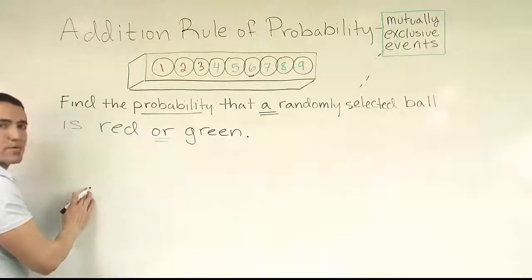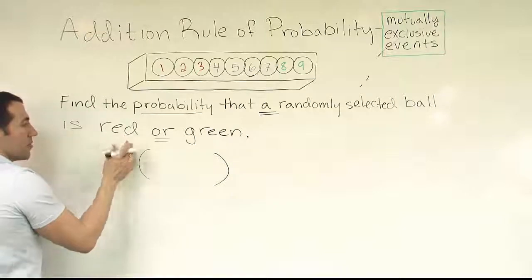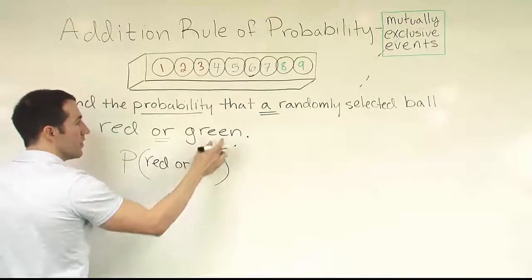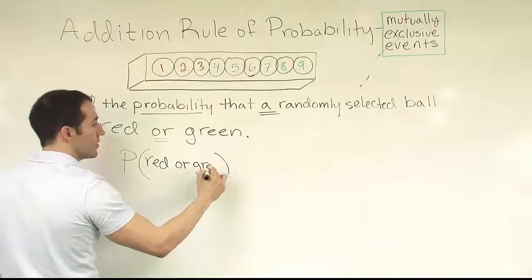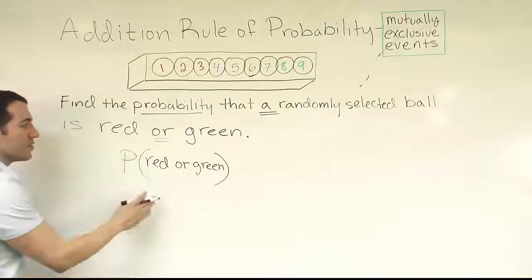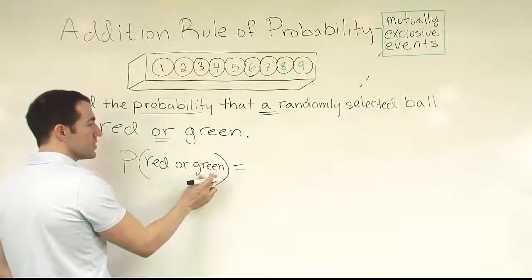So I'm going to begin writing out the addition rule formula. The rule is to say, I start out writing probability of the first one, I put the word or, and then I put the second one there. So probability of red or green, just what this says. Alright, now the pattern says that I'm supposed to make a fraction for this scenario, make a fraction for this scenario, and then subtract off the scenario where the item belongs to both groups at the same time.